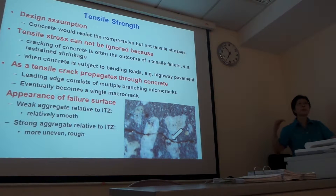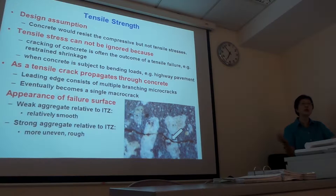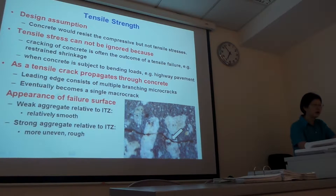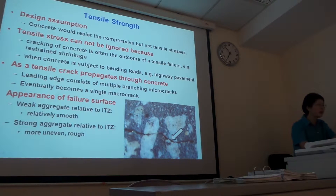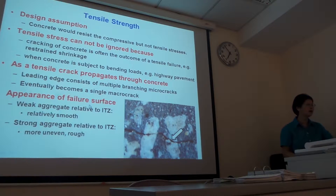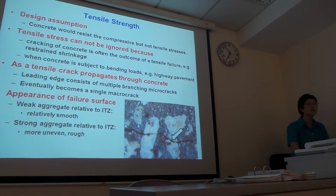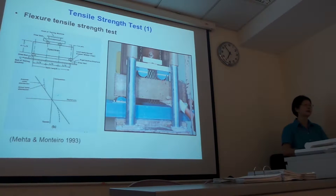This is silica fume. You actually improve the cementer paste. You improve the interface transition zone. So this is the thing in high-strength concrete — the crack goes through the aggregate. So the appearance of a failure surface is actually depending on the aggregate. This is the interface transition zone between the aggregate and the cementer paste.